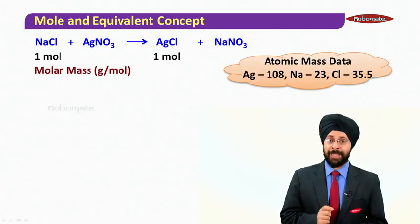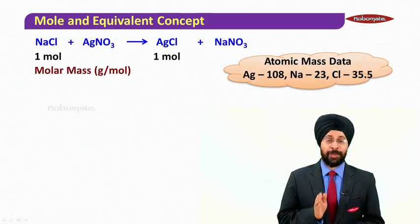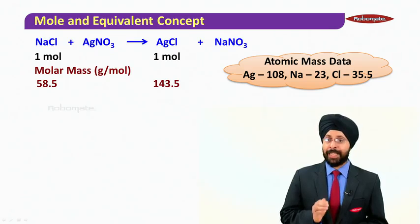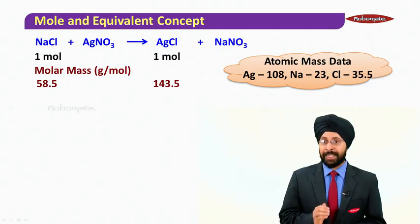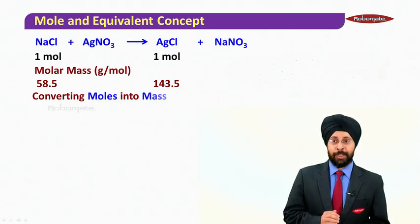So using the molar mass data, we have atomic weights given: silver is 108, sodium 23, and chlorine 35.5. So from here we can calculate the molar mass of NaCl as 58.5 and that of AgCl as 143.5.